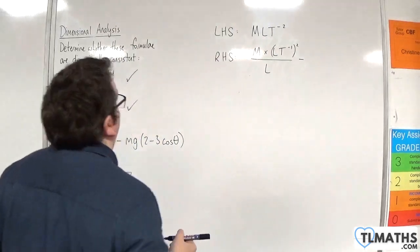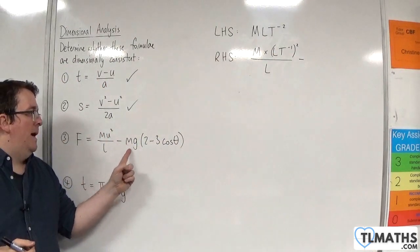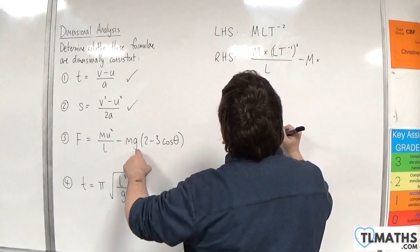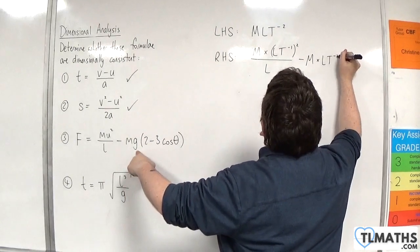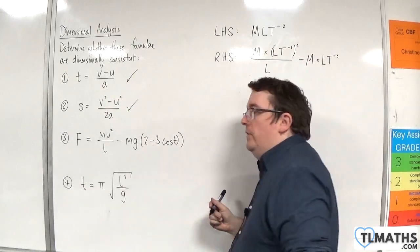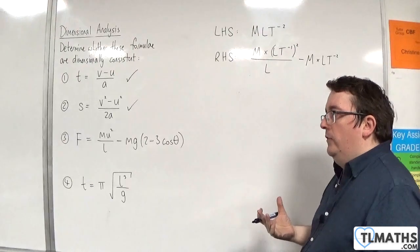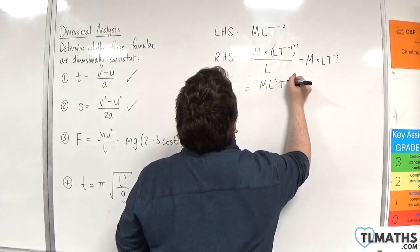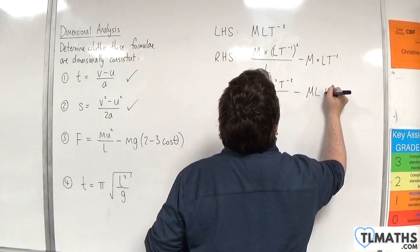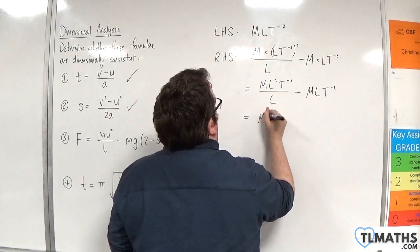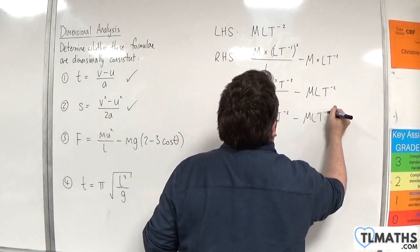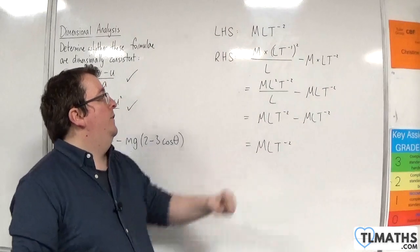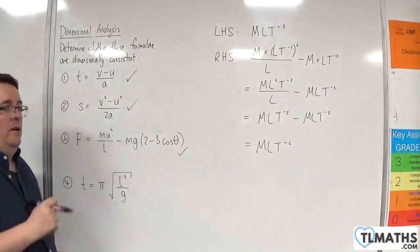Then we take away: a mass times g, which is an acceleration — metres per second per second — so LT⁻². The factor (2 - 3cosθ) is dimensionless because θ is dimensionless. So we have ML²T⁻² over L, take away MLT⁻². That first term simplifies to MLT⁻². So MLT⁻² take away MLT⁻² is just MLT⁻², and that is what we have on the left-hand side. So the third formula is also dimensionally consistent.